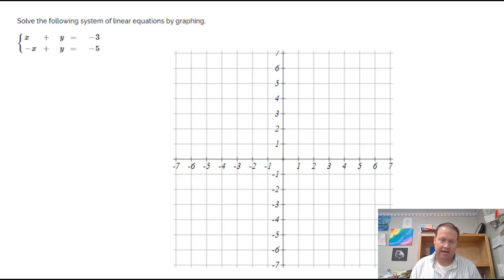So we are going to take this first equation, which is x plus y equals negative 3, and we're actually going to solve it for y so that I can graph it quickly. So I'm going to take away an x on both sides and I'll get y equals negative x minus 3.